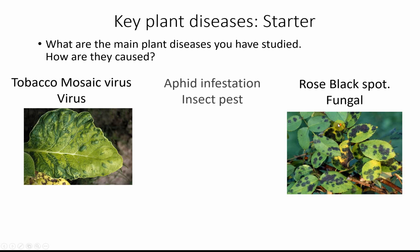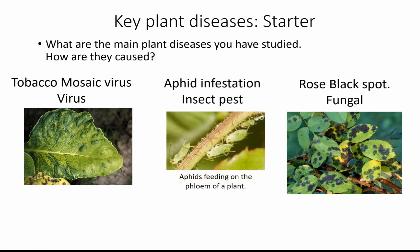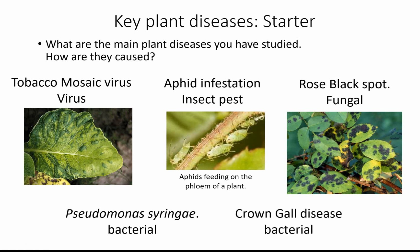There are other diseases you also need to be aware of: insect infestation by aphids, which feed on the sugars in the phloem — you can find them sucking on the stems or the underside of leaves; we call aphids greenfly as well. You should also know about Pseudomonas syringae bacterial infection and crown gall disease, which is also a bacterial infection. TMV and fungal black spot are your main ones to really know about.